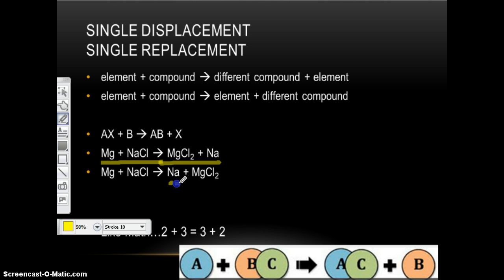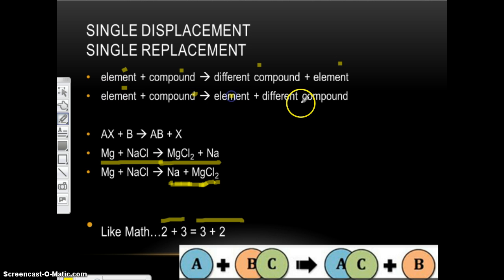Now, I wrote the exact same thing down here, but I switched these two around. It doesn't matter. It's like math class. Now in math class, two plus three equals three plus two. It equals five, no matter which one you put first. It's the same idea. Okay? So element compound makes compound element, or element compound makes element compound. It doesn't matter.